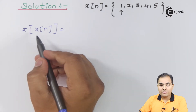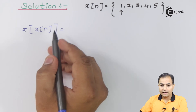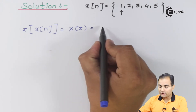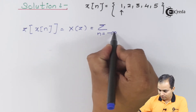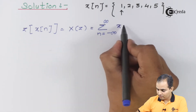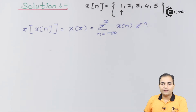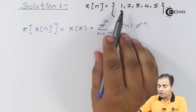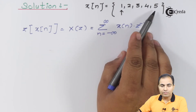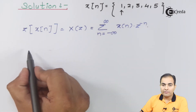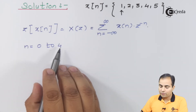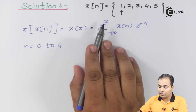The Z-transform of a discrete time signal x[n] is represented as X(z), and the definition is: X(z) = summation from minus infinity to infinity of x[n] times z raised to minus n. Since we have five samples starting at n=0 and ending at n=4, the summation limits change from n=0 to n=4.